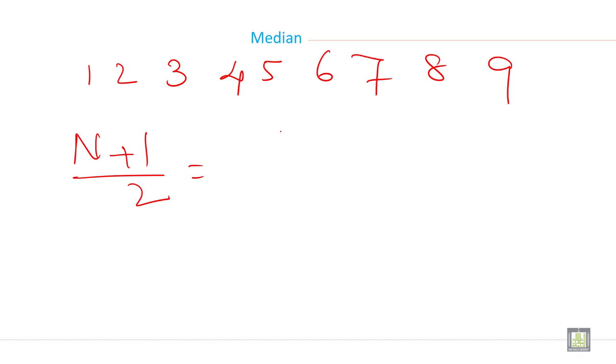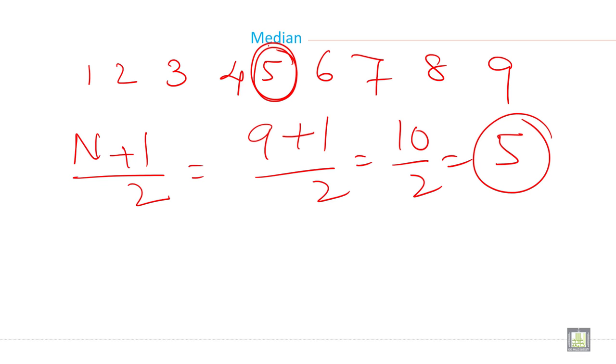Then the second step is calculate (n+1)/2. So here it is 9. So (9+1)/2, so it is 10/2, so it is 5. Remember 5 is not the median. The data on fifth place is the median. So this 5 becomes the median. This is the median. This is when you have odd numbers.